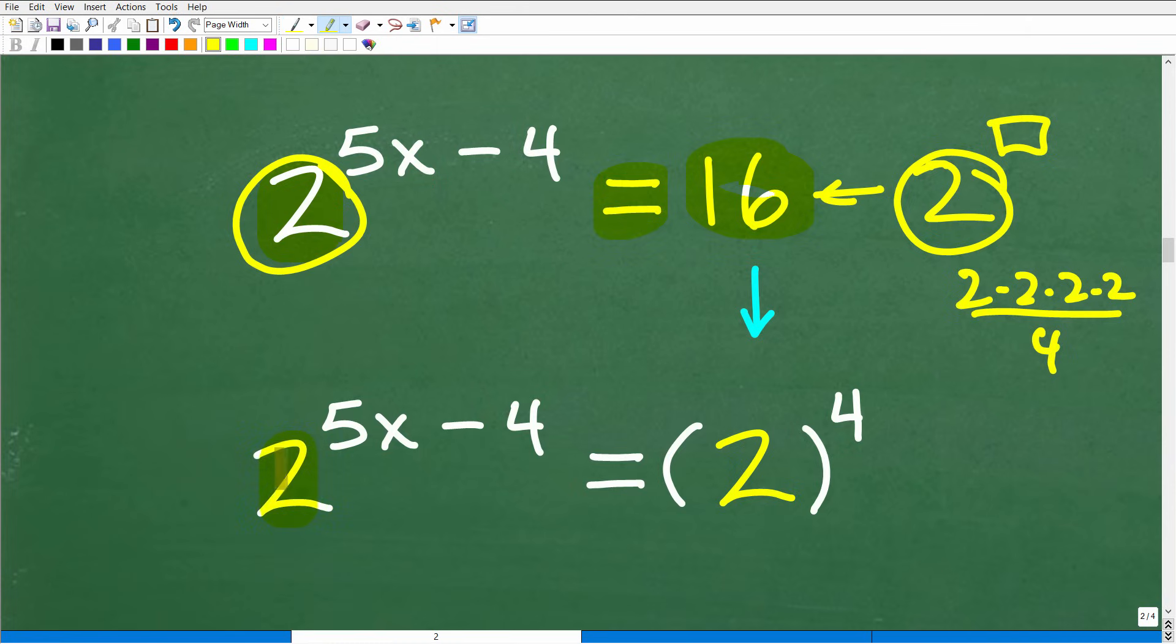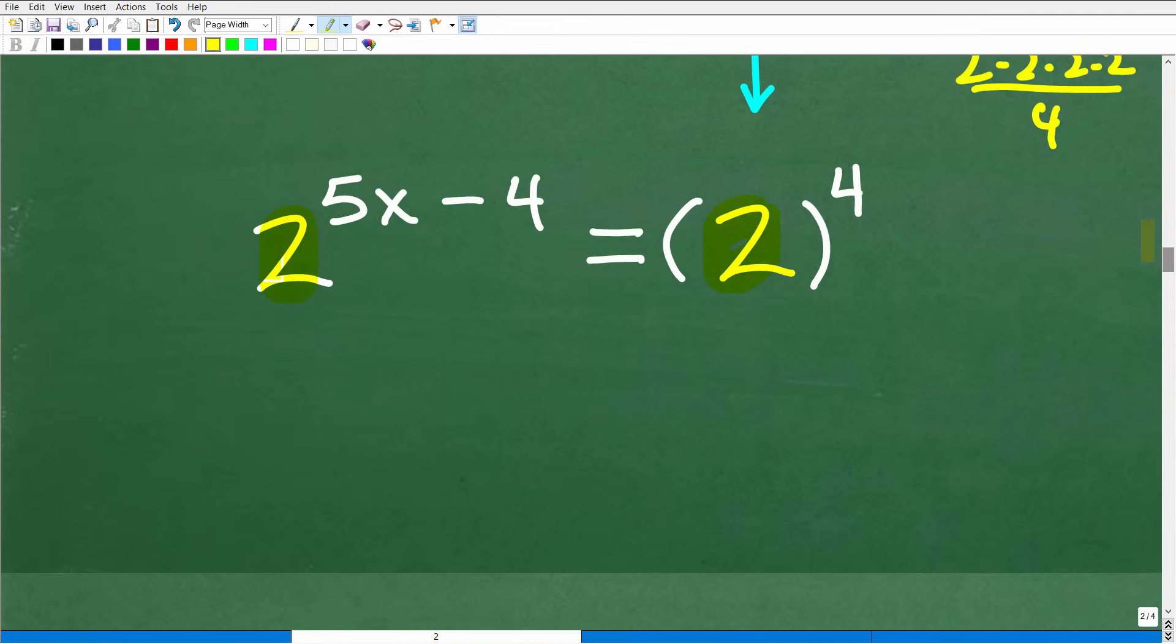So we want to write 16 as two to the fourth. And now that we have an equation and these two things are the same, these bases are the same, this is going to become very, very easy to solve.